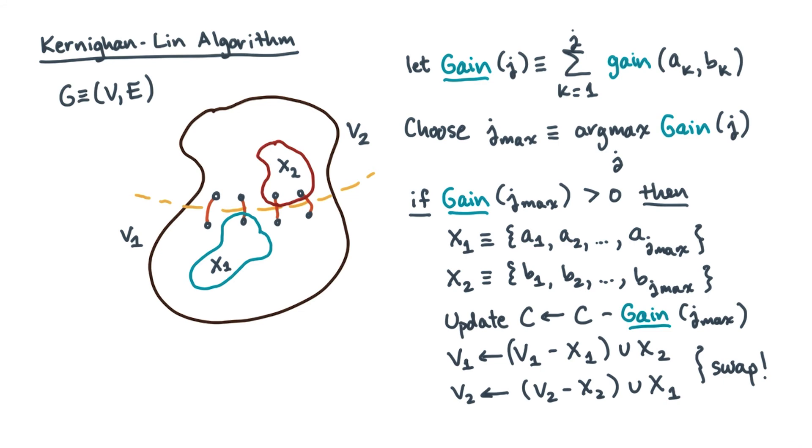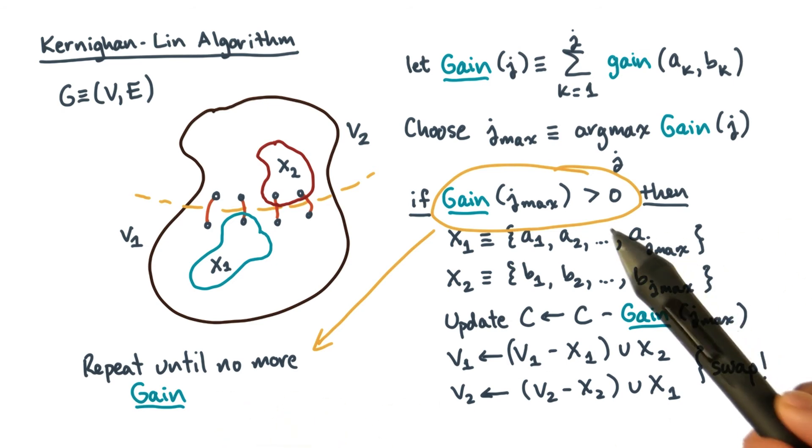Now for the last detail. You'll repeat the entire procedure we've just described, parts one and part two, until there is no more gain. In other words, if this condition is false, then the algorithm terminates.